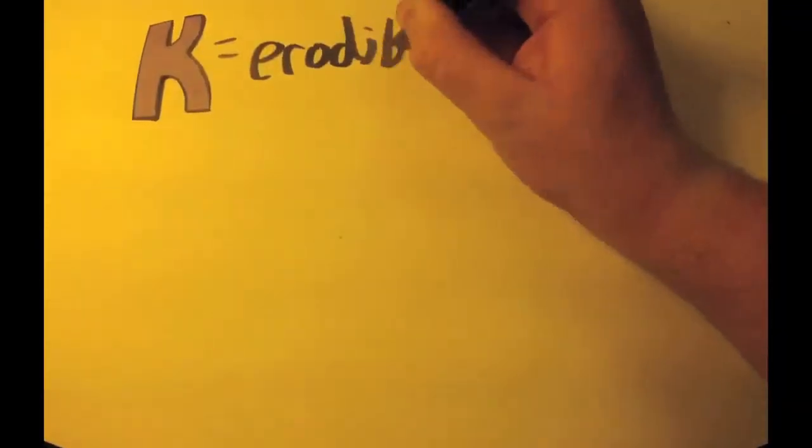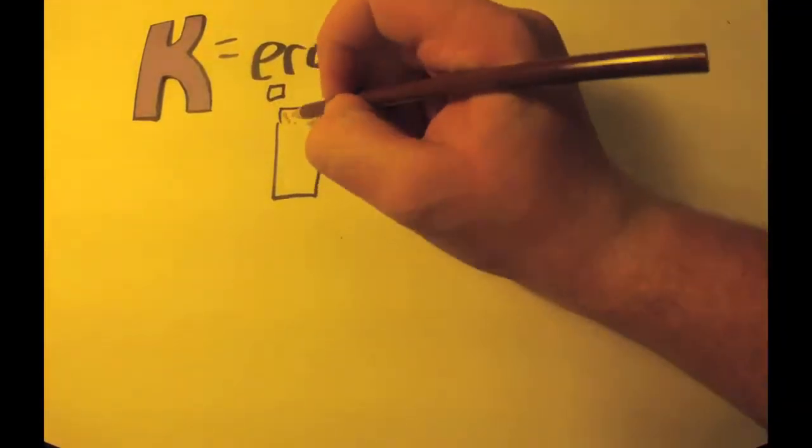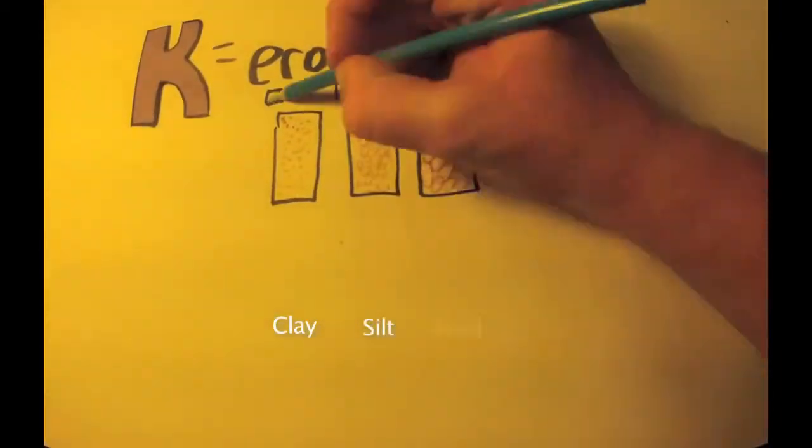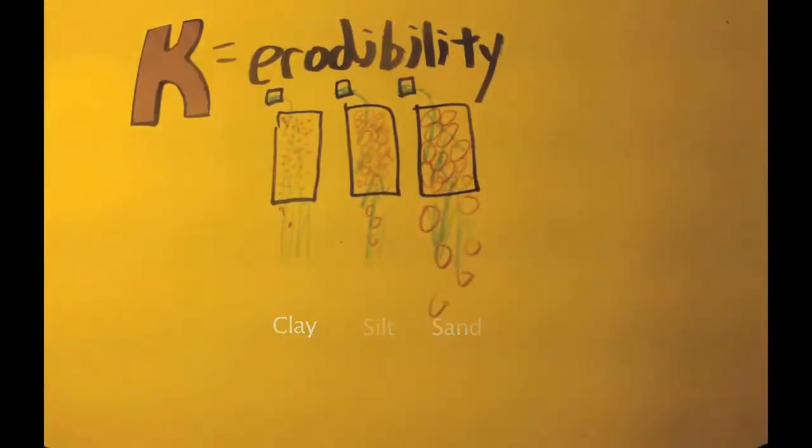K is the erodibility factor. This is affected by the soil's physical properties. Different soil particle sizes will be affected differently. The larger the particle size, the more soil that will be lost.